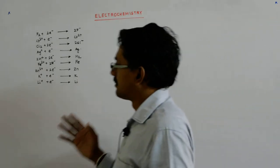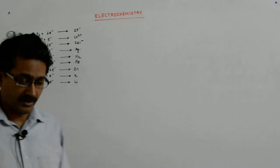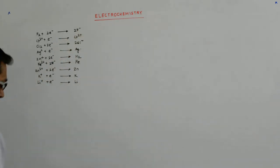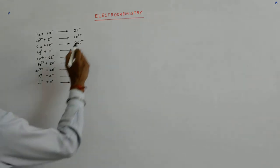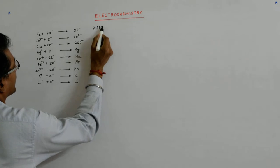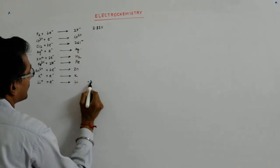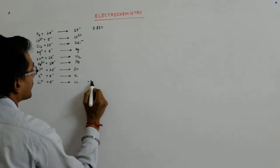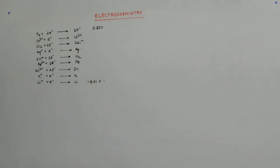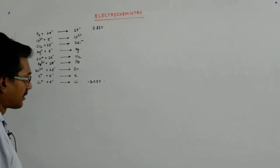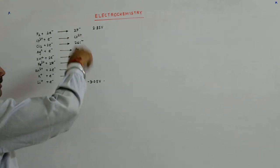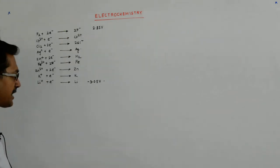Now, we had seen the reduction potential of these. I have not written this, but this is in the descending order. So, this is your 2.85 volt and this was minus 3.01 volt, 3.05, 3.05 volt. This is how it was and they were decreasing in their strength. So, that is the reduction potential.